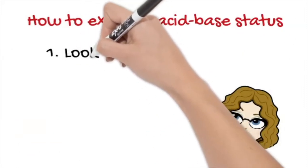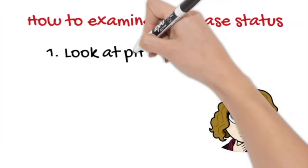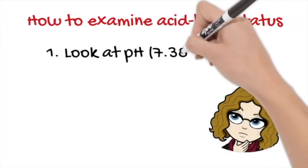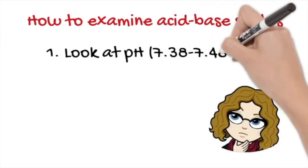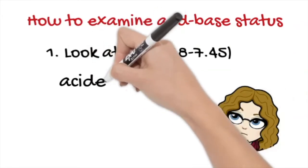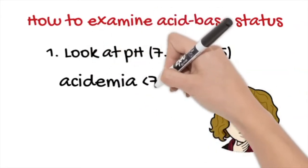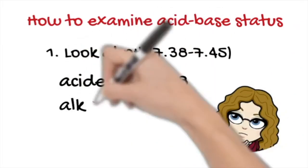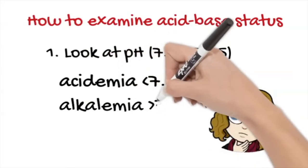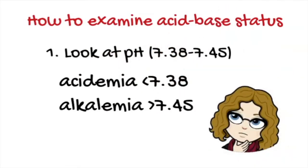The first step is look at the pH that appears in our gases. If the pH value is decreased below the range 7.38 is called acidemia and if the pH is increased outside of the range 7.45 is considered alkalemia.